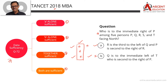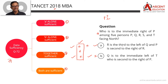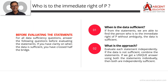The question asks: Who is to the immediate right of P? Among 5 persons — P, Q, R, S, and T — if they are made to sit facing north, who is to the immediate right of P? If we get a unique answer, the data is sufficient; if there are multiple possible answers, the data is not sufficient.